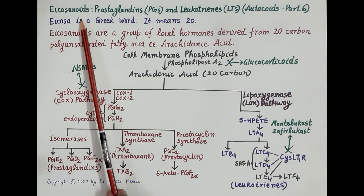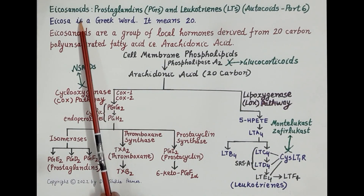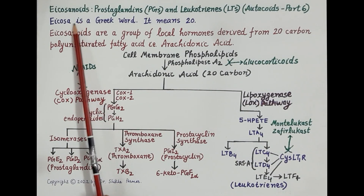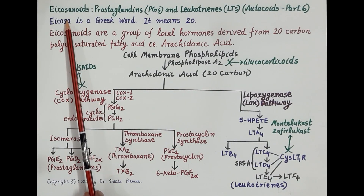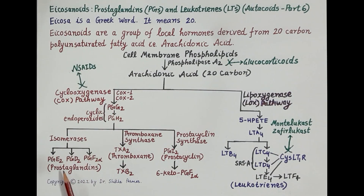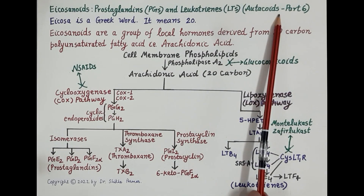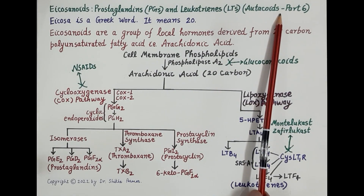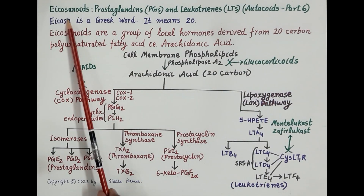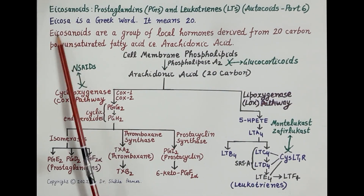In today's video we are going to study pharmacology of eicosanoids, specifically prostaglandins, thromboxane, prostacyclin, and leukotrienes. This video is the sixth in the series of videos on autacoids. Let's first understand what eicosanoids are.